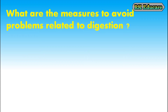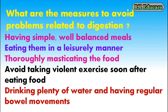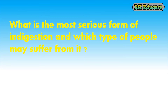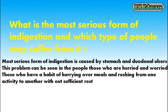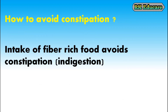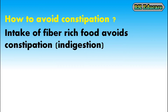What are the measures to avoid problems related to digestion? Having simple, well-balanced meals, eating them in a leisurely manner, thoroughly masticating the food, avoiding violent exercise soon after eating, drinking plenty of water and having regular bowel movements. What is the most serious form of indigestion? The most serious form of indigestion is caused by stomach and duodenal ulcers, seen in people who are hurried and worried or who rush from one activity to another without sufficient rest. Intake of fiber-rich food avoids constipation.